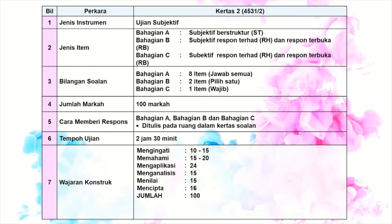Cikgu ingin menyentuh tentang bilangan soalan. Fizik kertas 2 terdiri daripada bahagian A, bahagian B, bahagian C. Bahagian A mengandungi 8 item iaitu 8 soalan dengan markahnya ialah 60 markah. Bahagian B terdiri daripada 2 item di mana murid-murid perlu memilih salah satu soalan, dengan peruntukan markah 20 markah setiap item. Manakala bahagian C terdiri daripada 1 soalan yang markahnya juga adalah 20 markah.